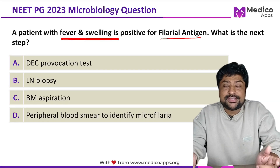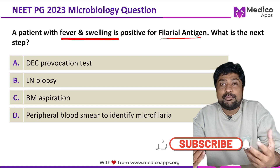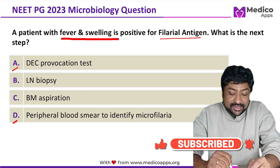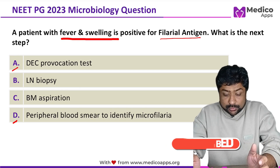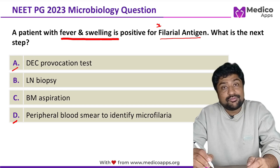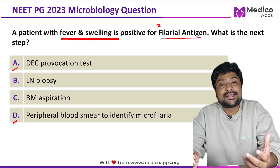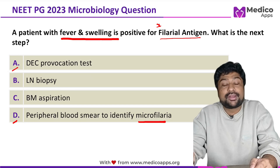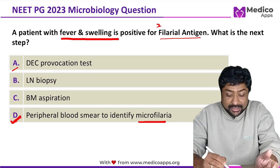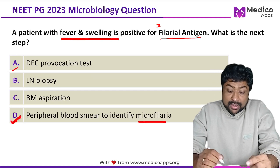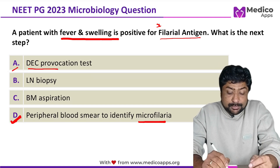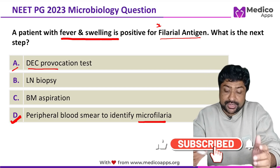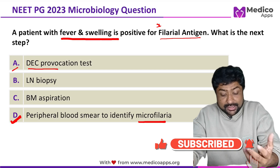This seems like a very easy question, but many students got confused between options A and D. If the filarial antigen is positive, we have to establish the diagnosis of filariasis, and for that we have to demonstrate microfilariae. One of the best options is peripheral smear to identify microfilariae. DEC provocation test was only done when you were not able to demonstrate microfilariae in the peripheral smear.